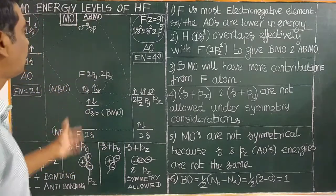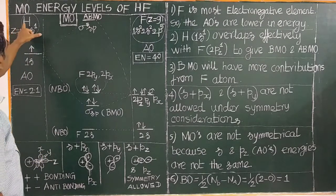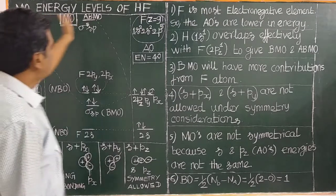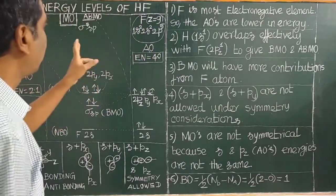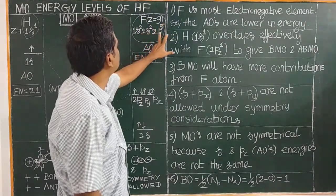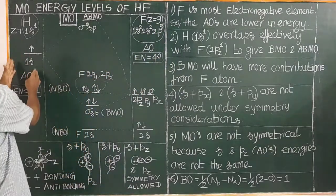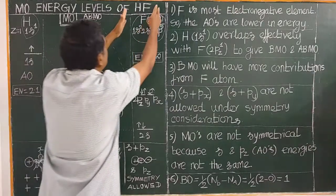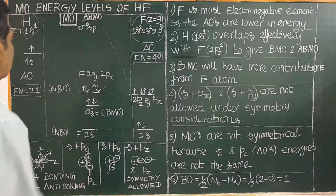First, you need to look at the electronic configuration of hydrogen on the left-hand side, and on the right-hand side, the electronic configuration of fluorine. The electronic configuration of fluorine is 1s2, 2s2, 2p5. On the left side are the atomic orbitals of hydrogen, and on the right side are the atomic orbitals of fluorine.